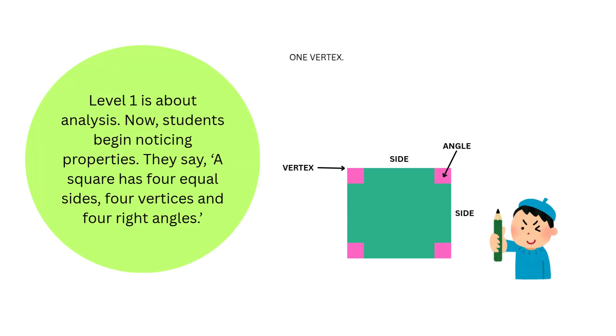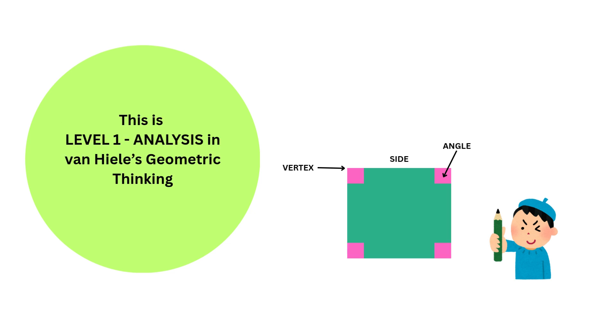Level 1 is about analysis. Now students begin noticing properties. They say a square has four equal sides, four vertices, and four right angles. This is Level 1—Analysis in Van Hiele's Geometric Thinking.